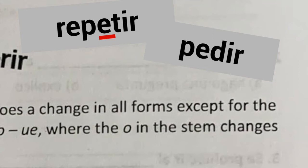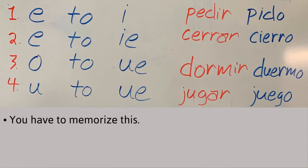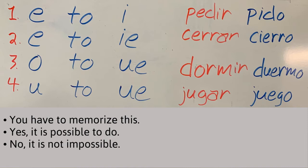And lastly, the verb pedir — underline under the letter E. Those are the stem change areas, the part of the verb where the stem change will occur. The only way to know which verbs are stem changing and which are not, and which verbs stem change one way or another, is to commit them to memory.